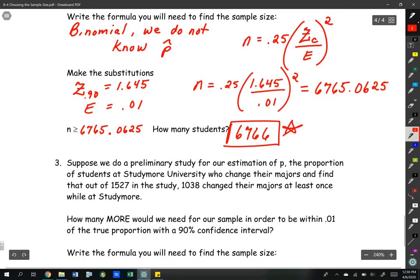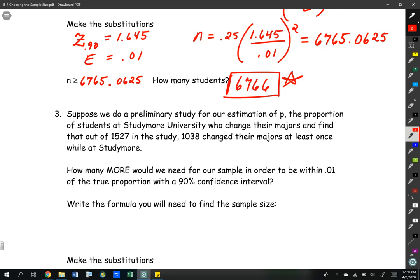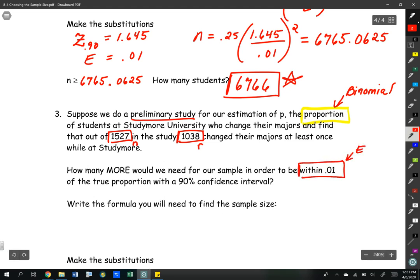Let's take a look at number three. Suppose we do a preliminary study for our estimation of p, the proportion of students at Study More University. So we know we're dealing with a binomial again. Keyword here, proportion. It looks like this time we do a preliminary study, so we're going to know p-hat. Out of 1527 in the study, 1038 changed their majors at least once while at Study More. How many more would we need for our sample in order to be within 0.01 of the true proportion with a 90% confidence interval?